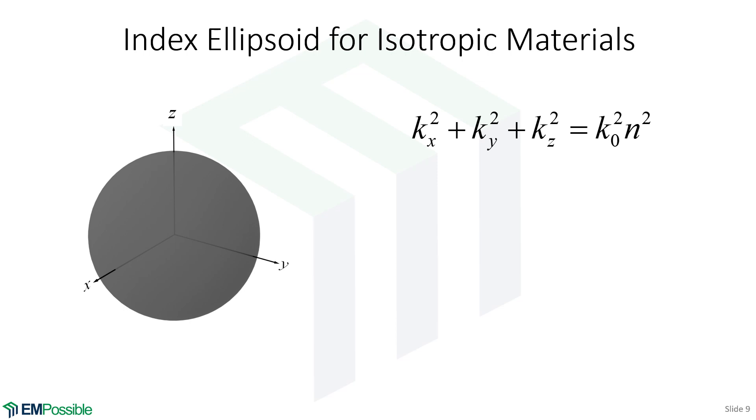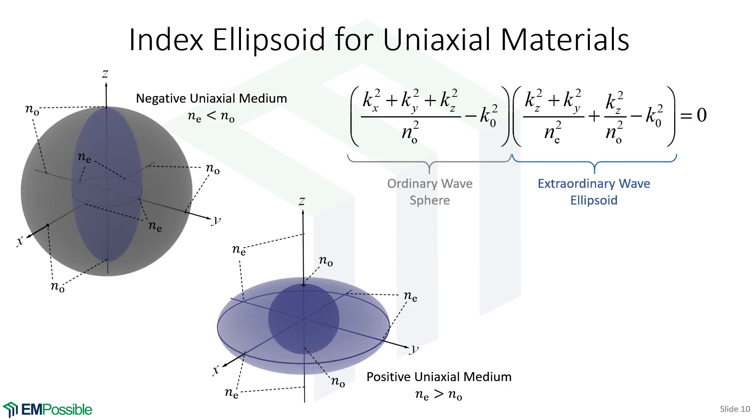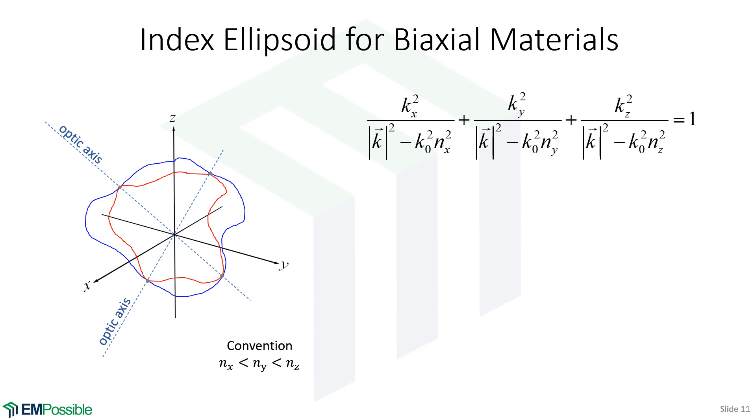So for uniaxial materials, that means there's two directions that the electric field can oscillate that'll see the same permittivity, and the third one sees a different one. If we were to derive our dispersion relation, and it's a bit more complicated to do so, we would get the last case, and probably the most general case, is called a biaxial medium. And this is where it's anisotropic, and the electric field will see a different permittivity in all three directions. So there's sort of three different permittivities happening at the same time.